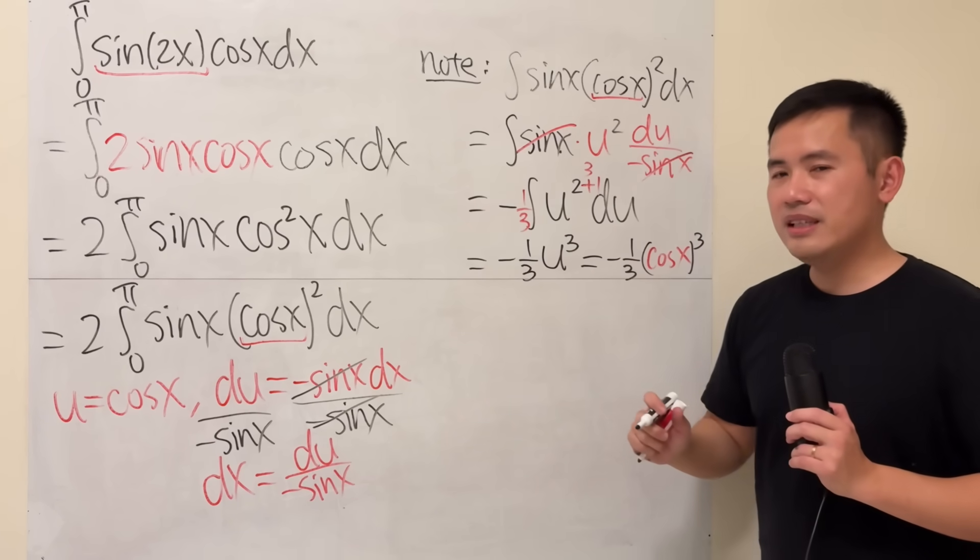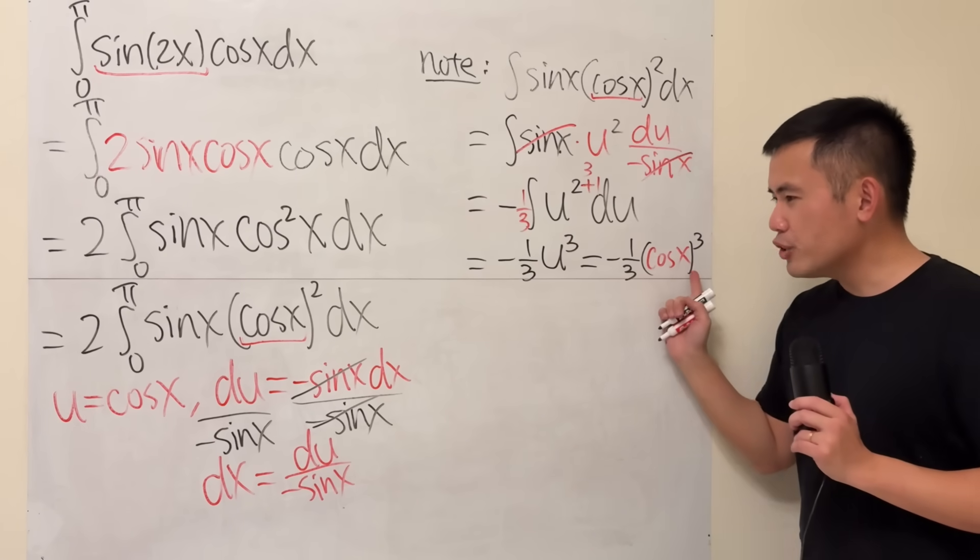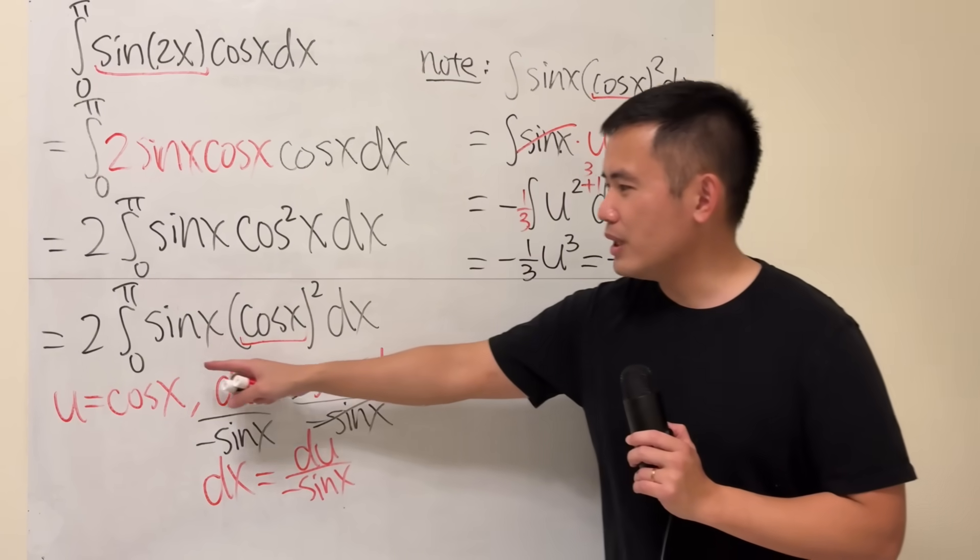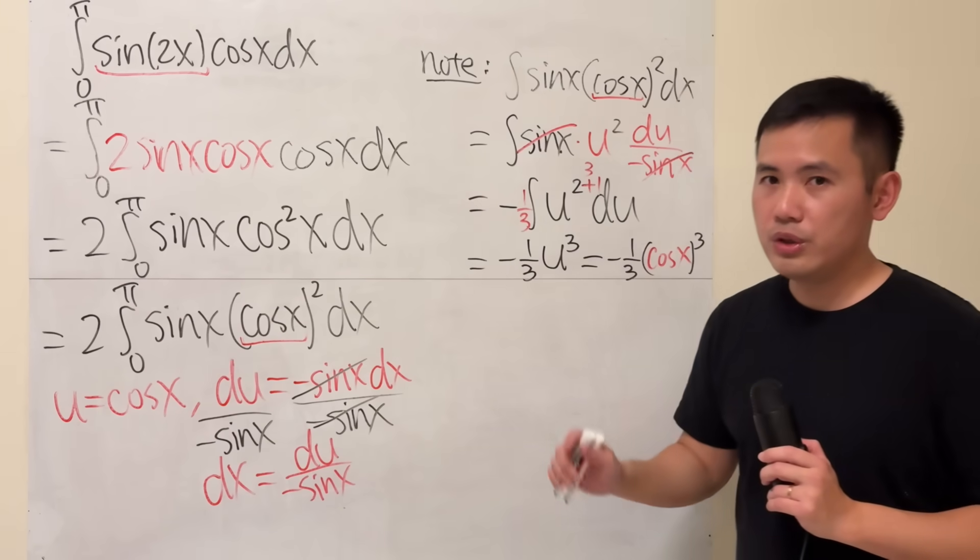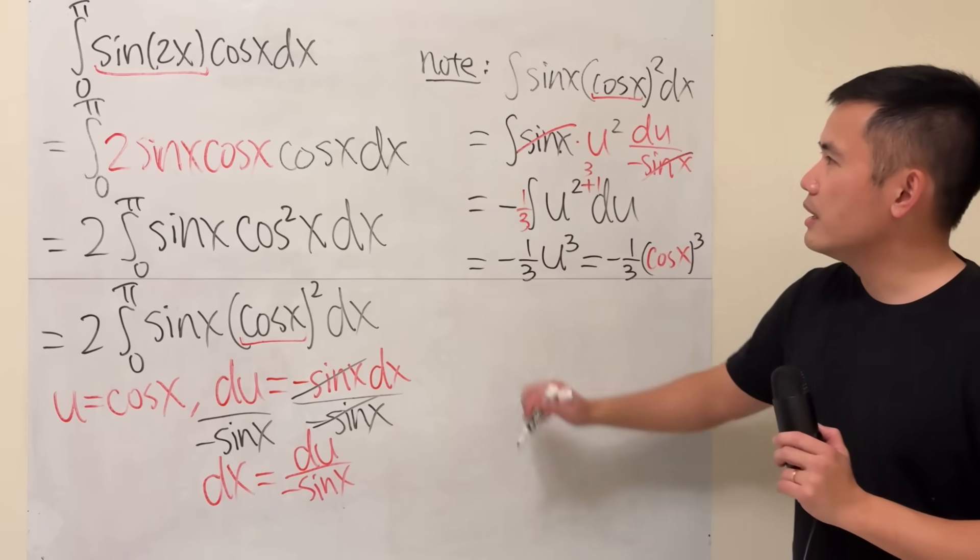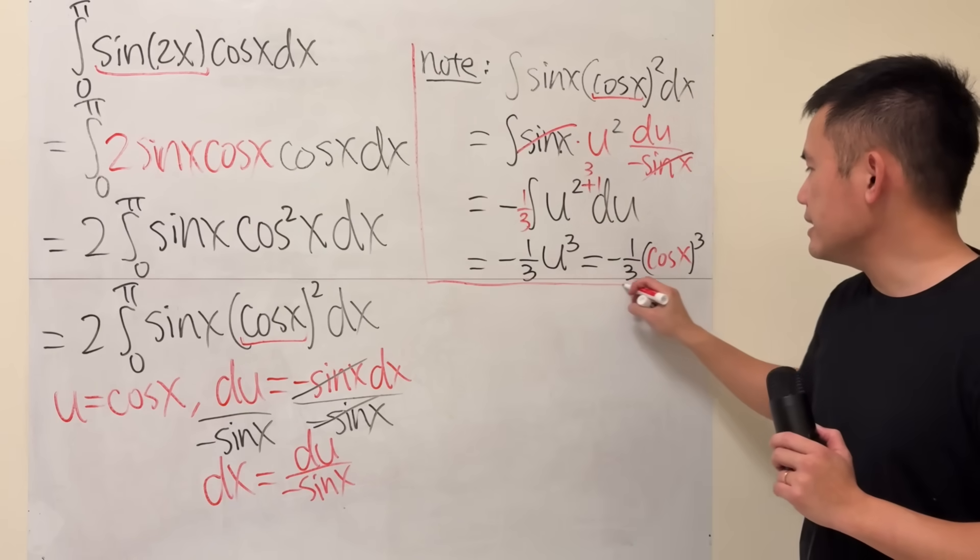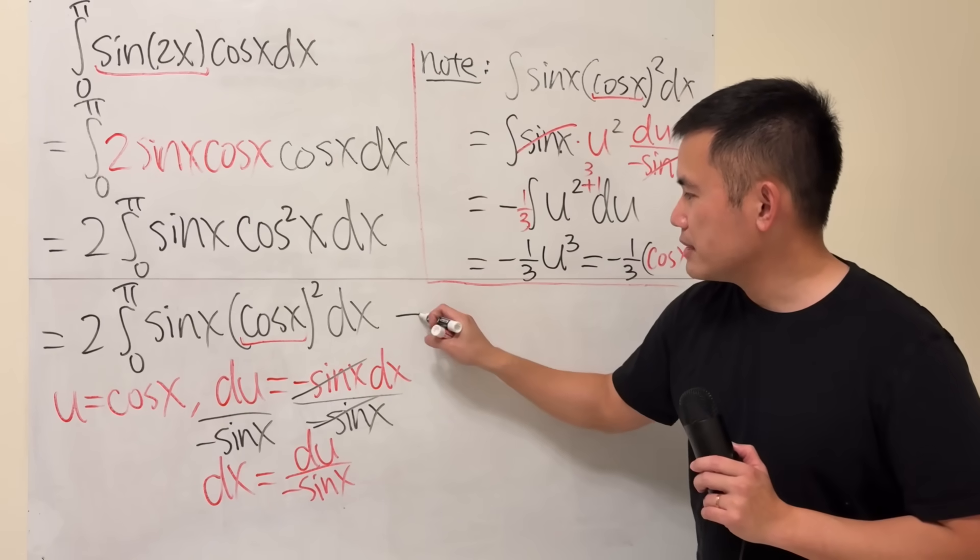I'm not going to put down a plus C because we still have to do the 0 and also the pi. When we have a definite integral, you don't need to put a plus C. Alright, so this right here is just that. Now, with that being said...